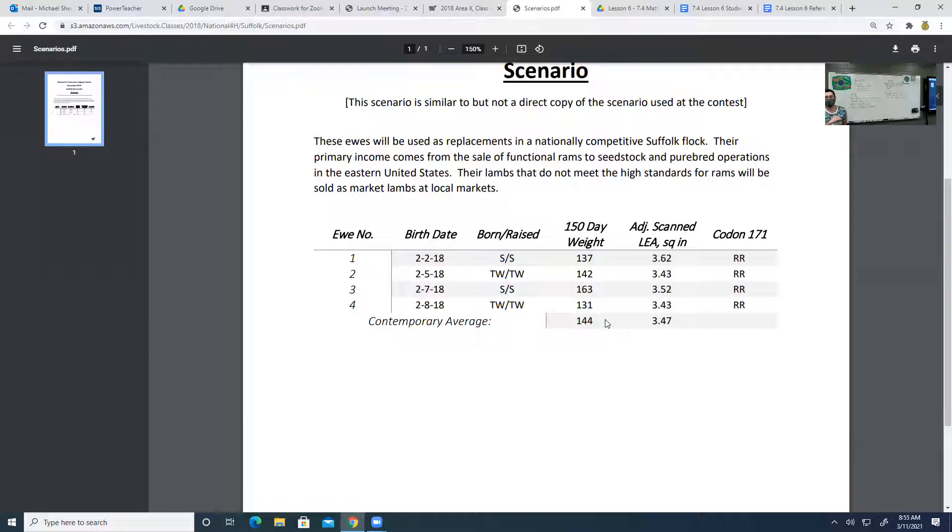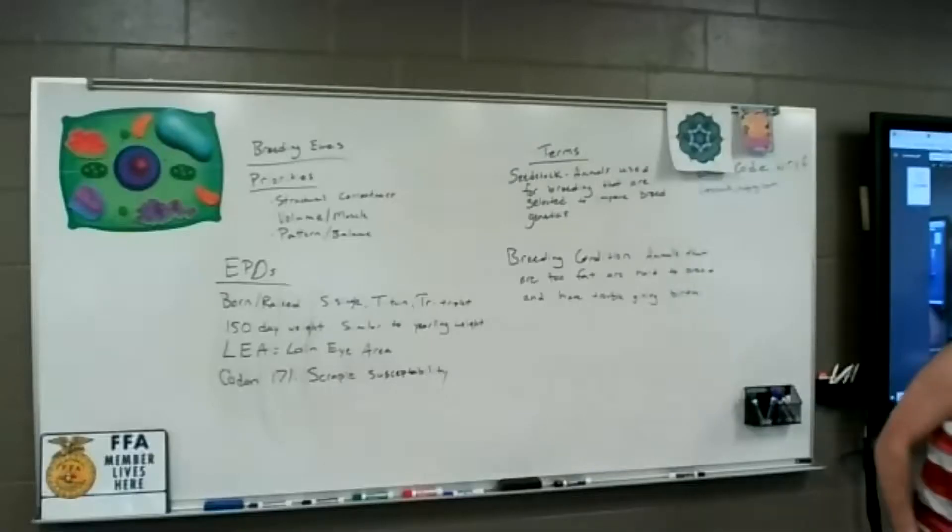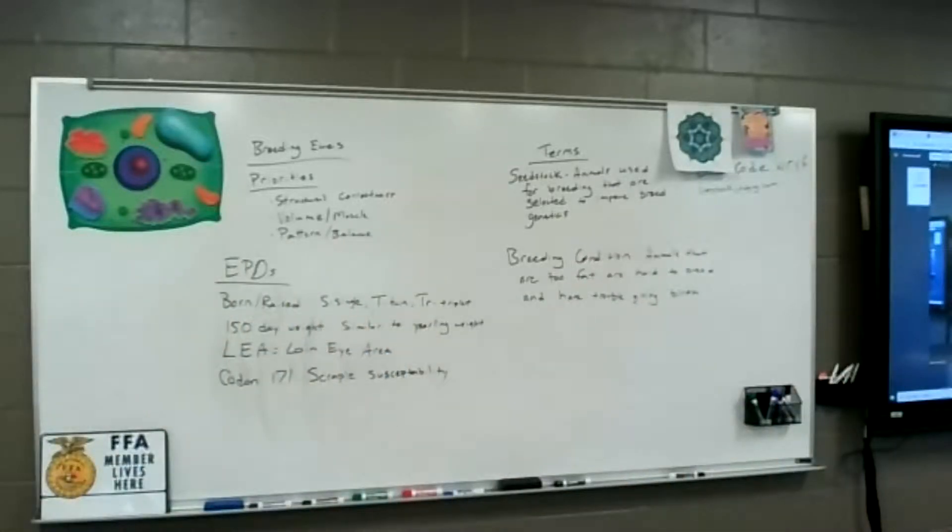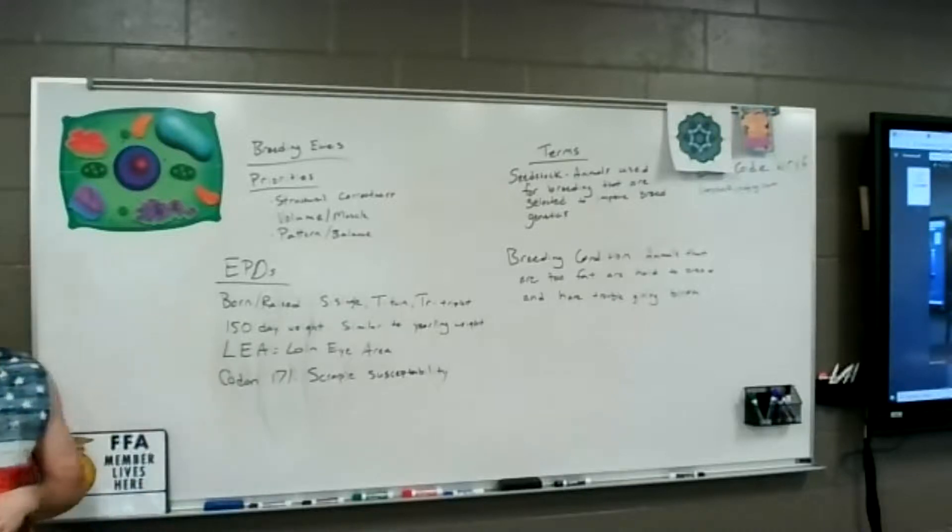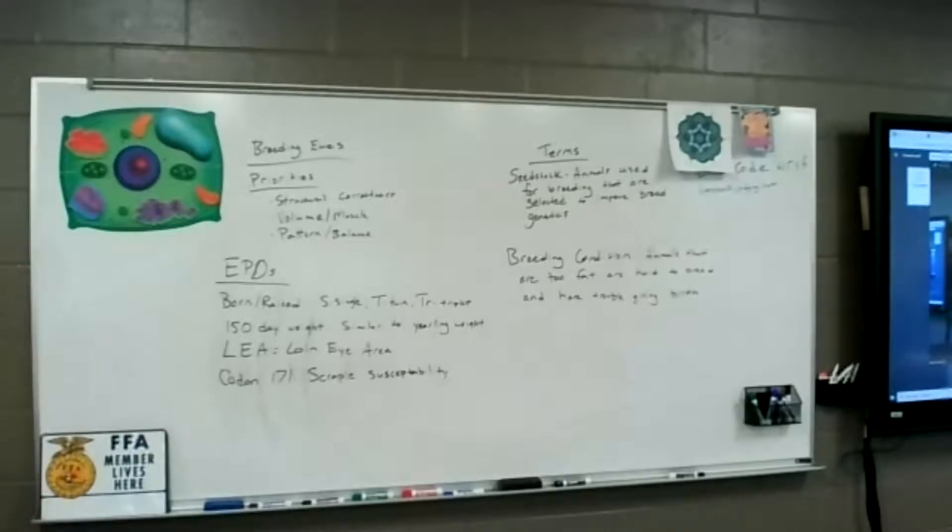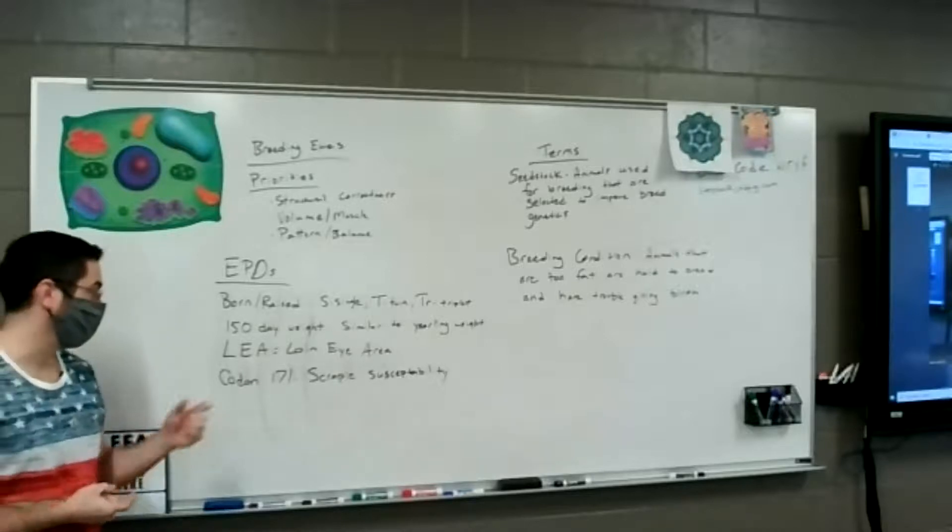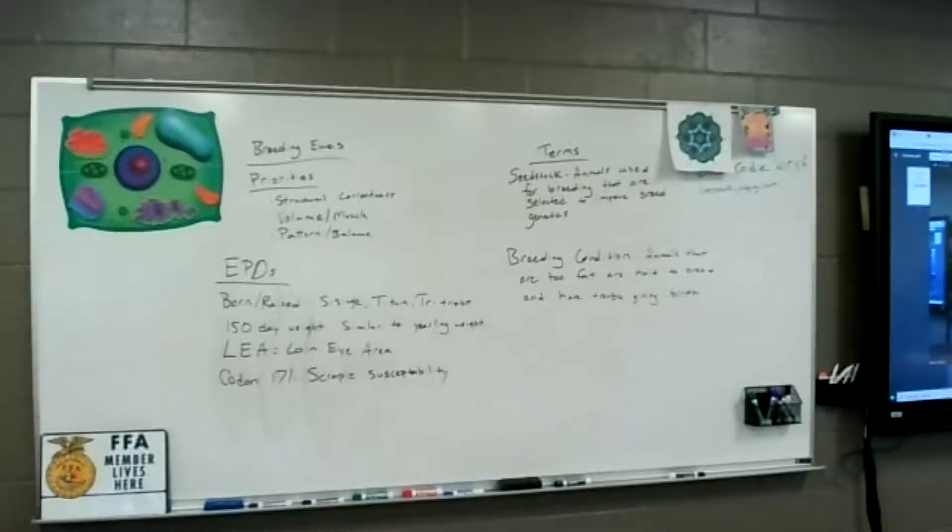150-day weight, very similar to, and we can stop sharing this, so I just wanted you to see that quickly. Your 150-day weight is very similar to yearling weight in cattle. If you think about it, it's about five months. That's when sheep are going to get to mature size. That's when they're going to be getting ready to go to market. We want them at 150 days to be very close to, you're going to want them somewhere between 120 and 150 pounds where they are getting ready to go to market already. LEA is loin area.